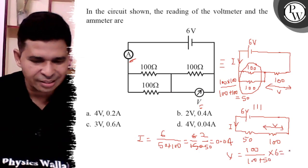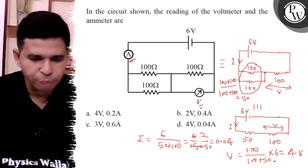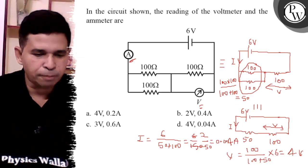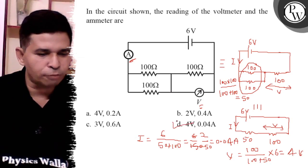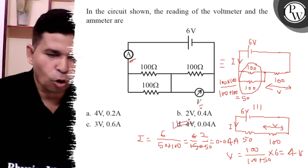So voltmeter reading is 4 volt and current is 0.04 ampere. That is option D. Thank you, all the best.